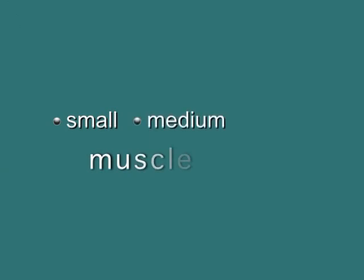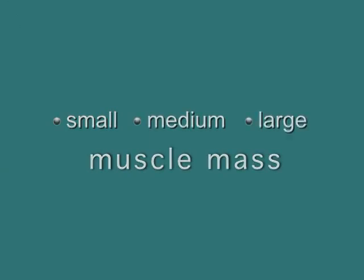Each of our patients varies in the size of the muscle whose movement ultimately creates the frown lines. It can be a small, medium, or large muscle mass. It is important to accurately evaluate the muscle mass first in order to choose the correct dosage. We look upon the degree of frowning and muscle mass during the act of frowning and at maximal frown.